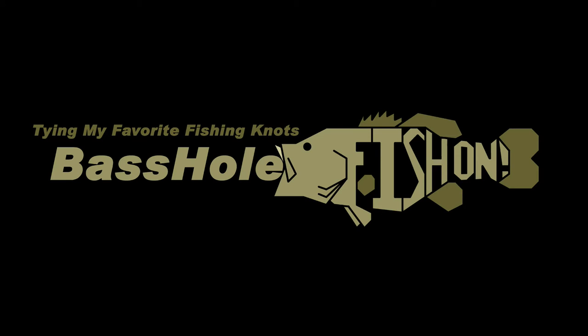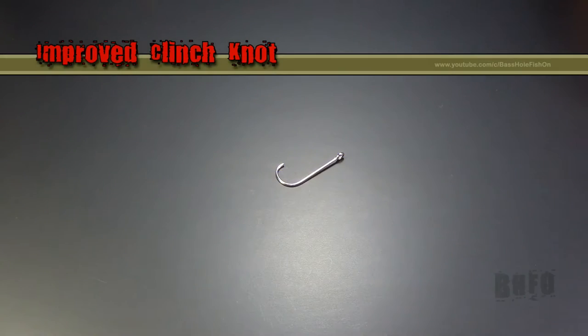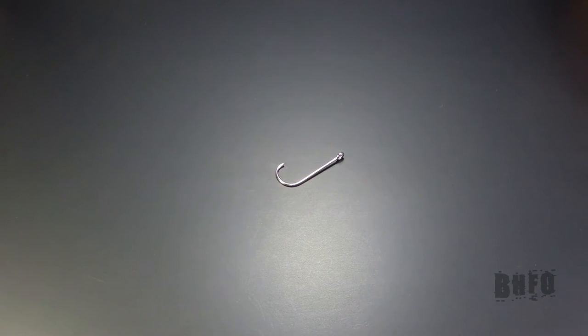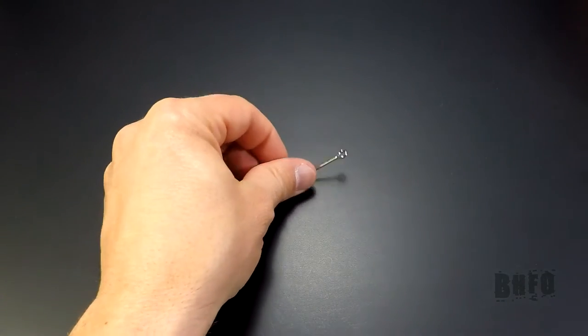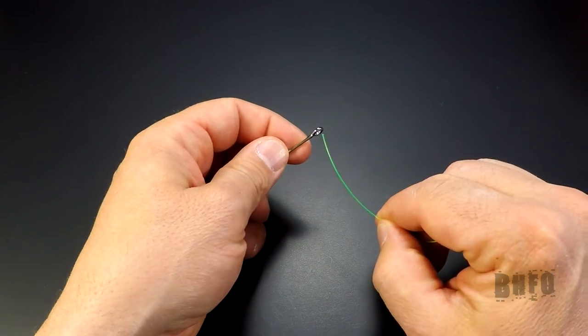Basshole here. Today I'm going to show you how I tie the improved clinch knot. I use this knot to tie hooks and lures to fluorocarbon or monofilament line. Let's get started. Take the line and go through the hook eye, pulling out about 8 to 10 inches of tag.